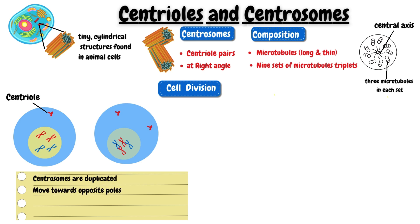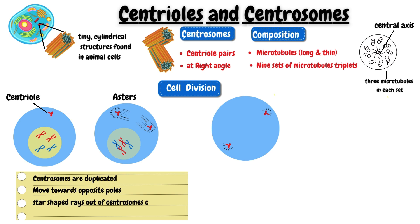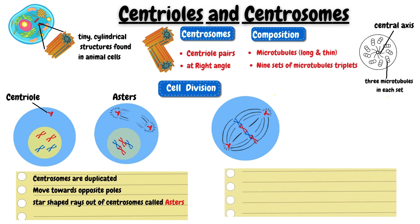The microtubules form star-shaped rays out of centrosomes called asters. Microtubules start growing and radiate from centrosomes towards the center of the cell, forming clusters known as spindle fibers.